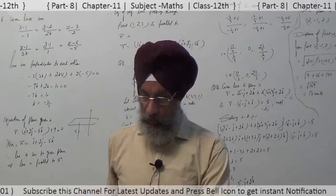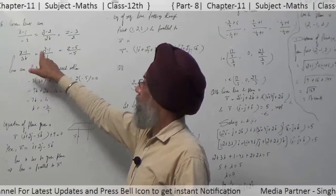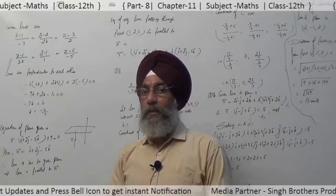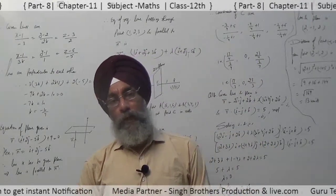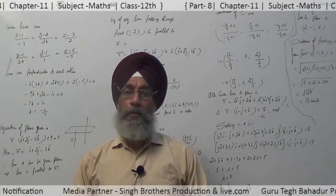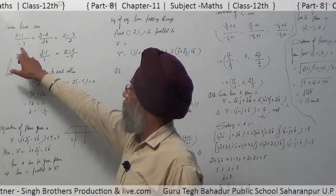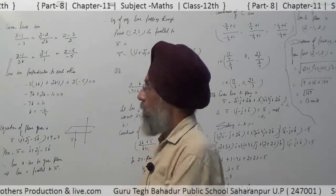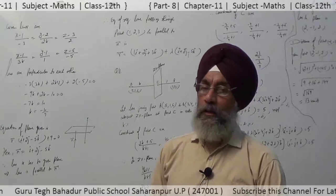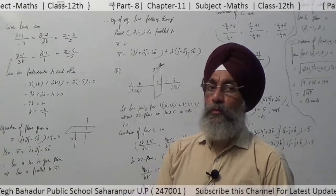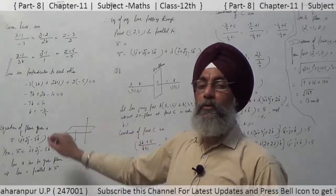Question number 6 of the miscellaneous exercise: if the lines (x-1)/(-3) = (y-2)/(2k) = (z-3)/2 and (x-1)/(3k) = (y-1)/1 = (z-6)/(-5) are perpendicular to each other, find the value of k. The direction ratios are (-3, 2k, 2) and (3k, 1, -5). Using a₁a₂ + b₁b₂ + c₁c₂ = 0 and solving, the value of k is -10/7.